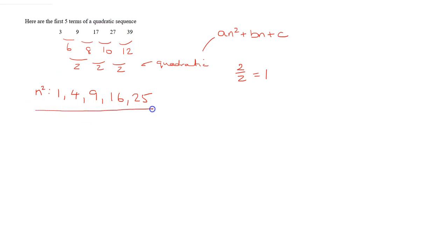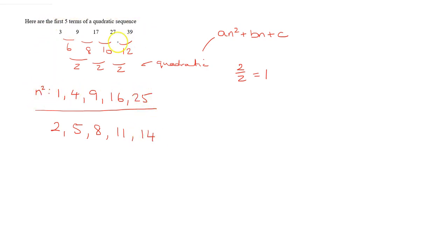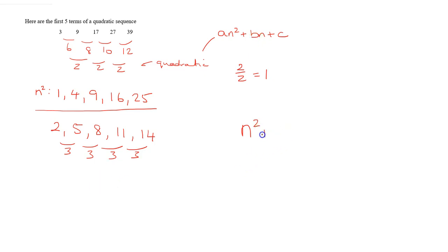We see how n squared relates to the original sequence. Taking the n squared component out — the residuals are: 3 minus 1 is 2, 9 minus 4 is 5, 17 minus 9 is 8, 27 minus 16 is 11, 39 minus 25 is 14. This leaves a new residual sequence: 2, 5, 8, 11, 14. The first difference is 3, 3, 3, 3 — all the same, so it's linear, and b equals 3.